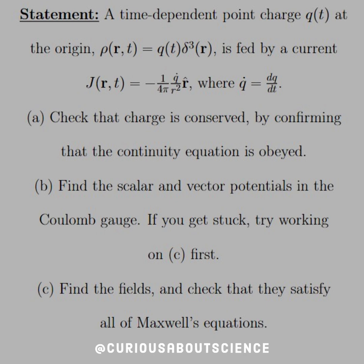So our statement now reads: a time-dependent point charge Q(t) at the origin, ρ(r,t) equals Q(t)δ³(r), is fed by a current J(r,t) equals negative 1 over 4π Q̇ over r² in the r̂ direction, where Q̇ equals dQ/dt.